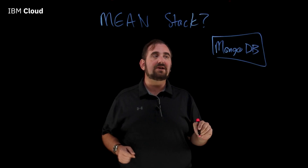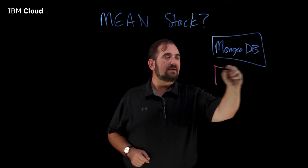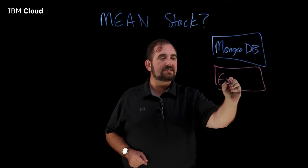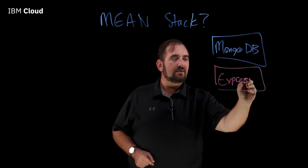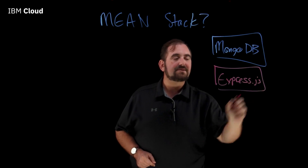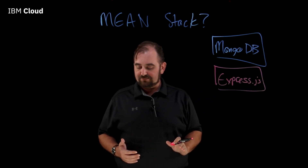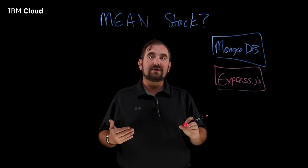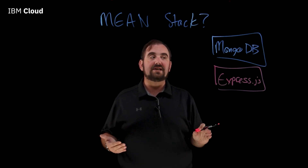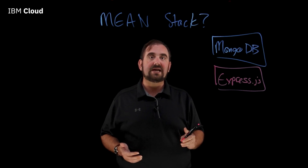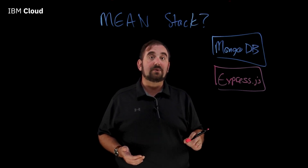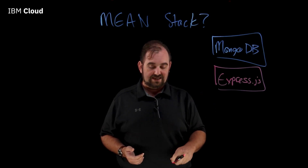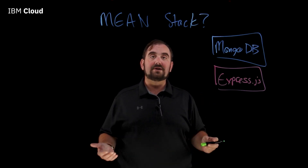The next letter is E. We've got our database, and now we've got an E. E is for Express, sometimes called Express.js. What is Express? Express is that layer within your application stack that's going to talk to the database. Express is going to take those requests that come in, fetch and send the data that comes back and forth out of that database — again, using JavaScript.